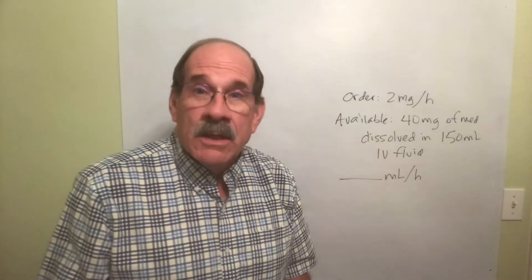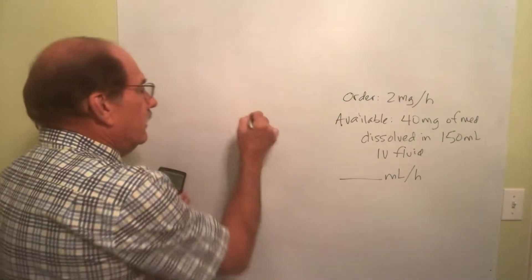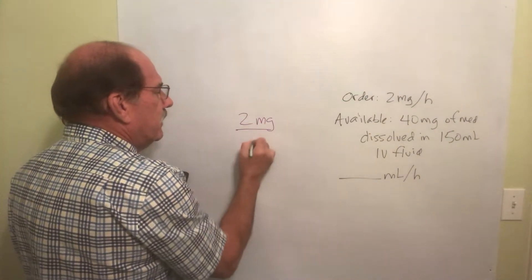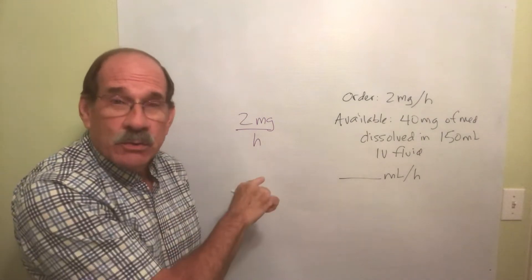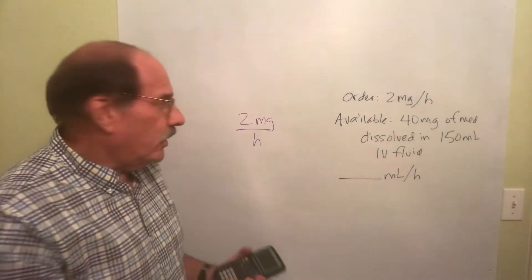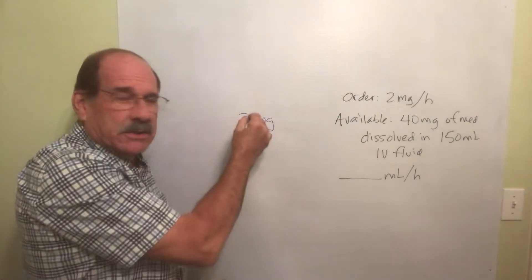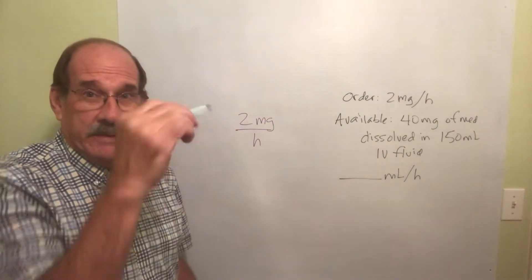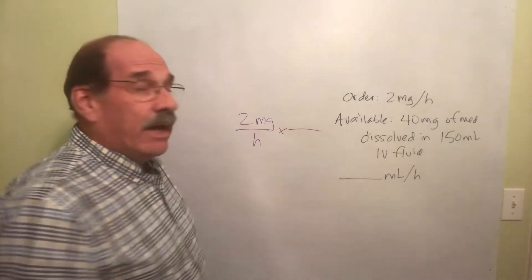I'm told the two milligrams per hour. So write that down — that's my order. Write it as a fraction: two milligrams on top, hours on the bottom, because 'per' means divided by.